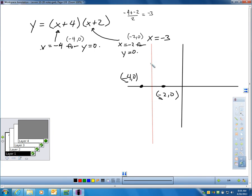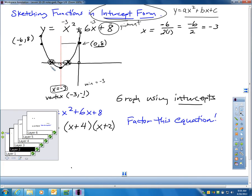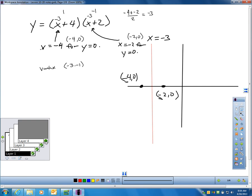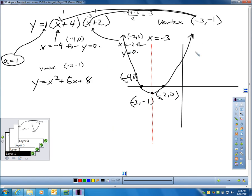To find the vertex, the vertex is right on the axis of symmetry. If I take negative 3 and I plug it in for x, it will tell me the value for y. So negative 3 plus 4 is 1, negative 3 plus 2 is negative 1, and 1 times negative 1 is negative 1. My vertex must be negative 3, negative 1, just like it was on my last slide, because this is the same graph. So I'll plot that point, and then I'll just draw this going up because my lead coefficient's 1.